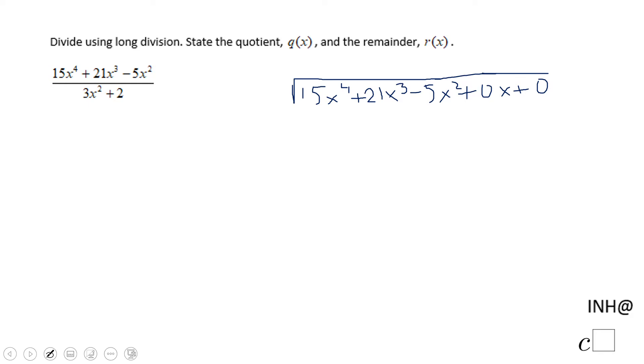Divide by 3x squared plus, and here the same story, you're going to write 0x plus 2.